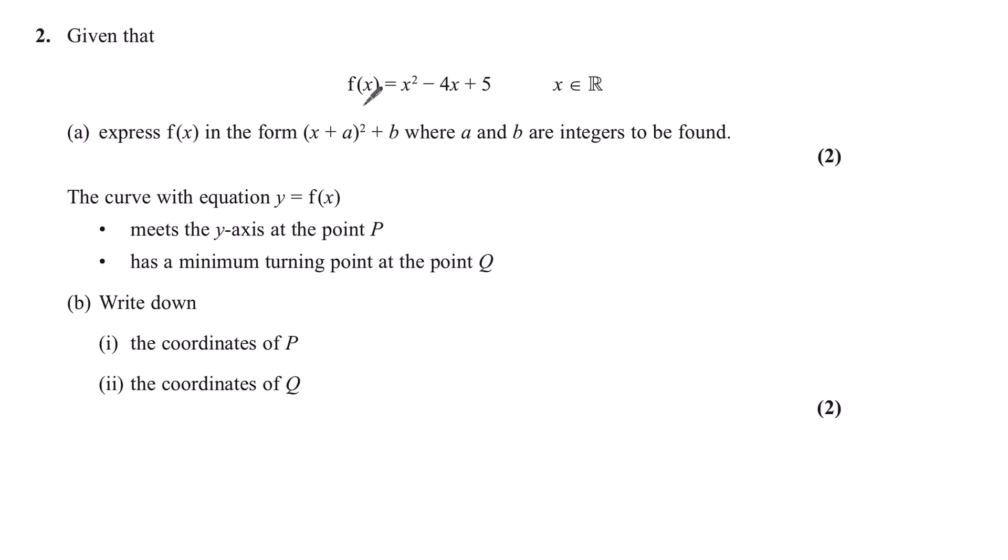Question 2. Given that f of x is equal to x squared minus 4x plus 5 for all real numbers, part a: express f of x in the form x plus a all squared plus b, where a and b are integers to be found.